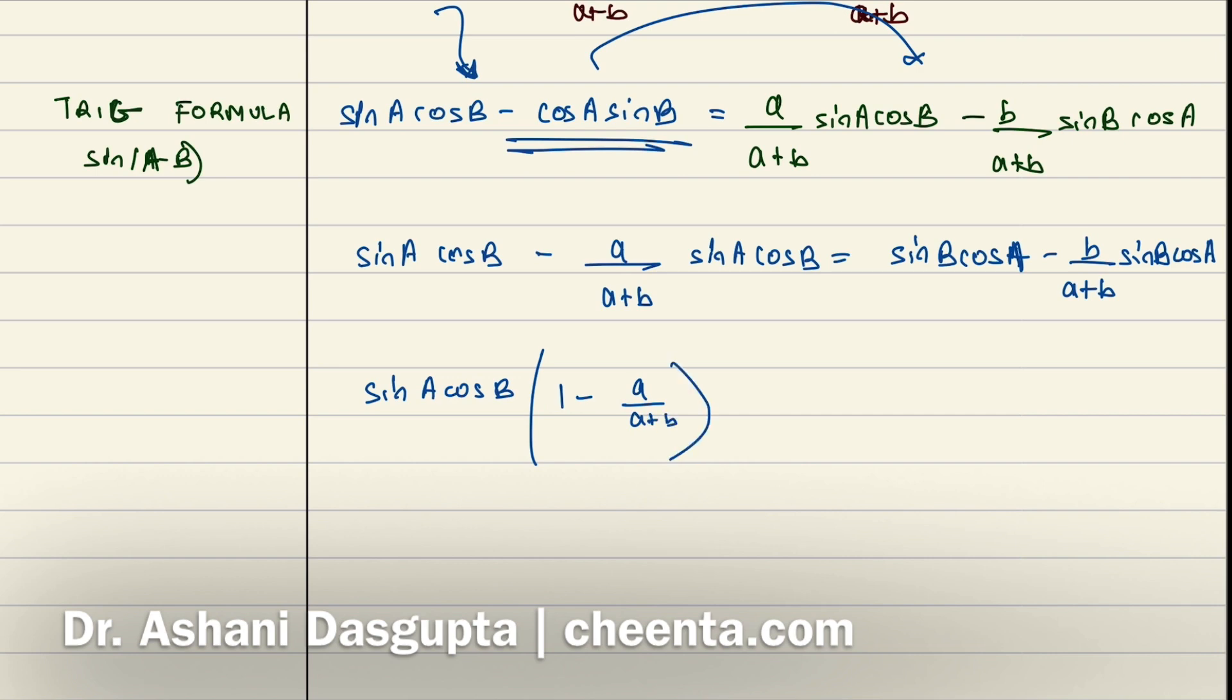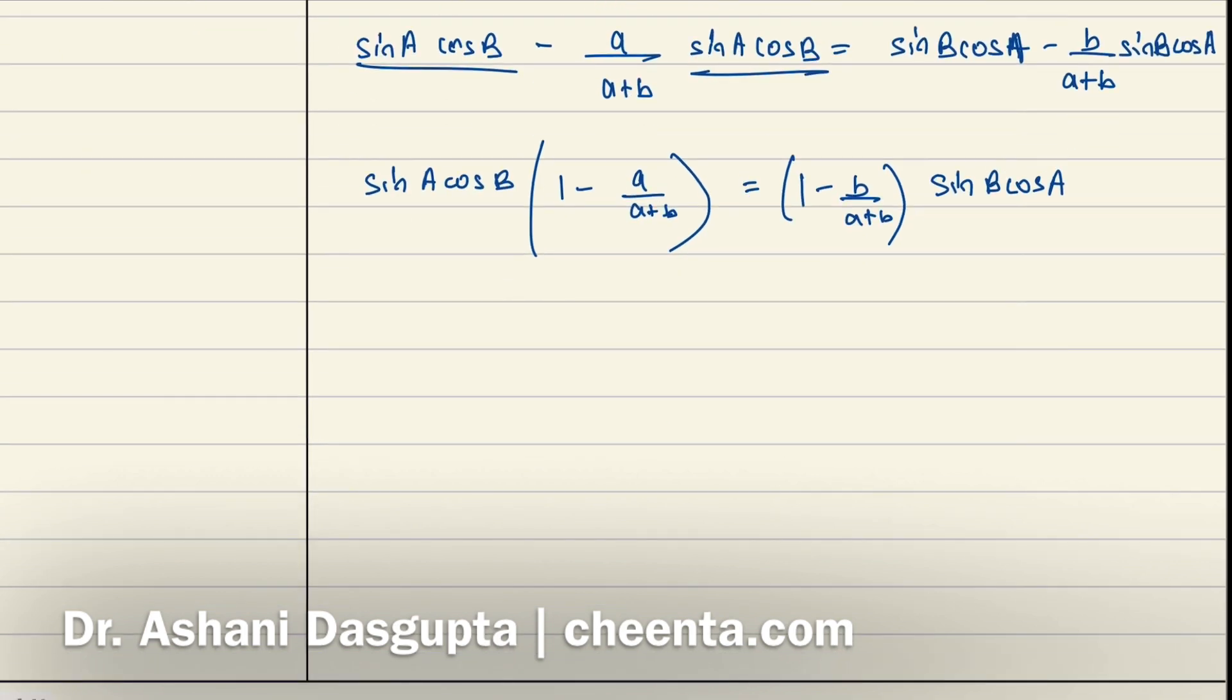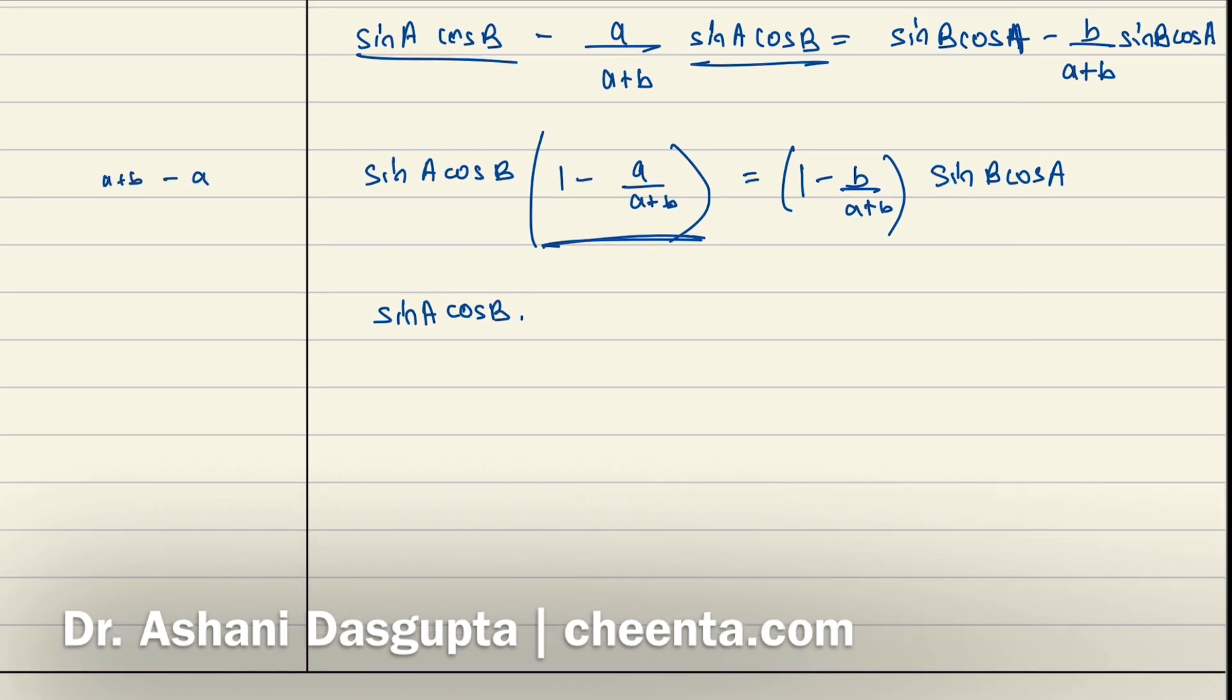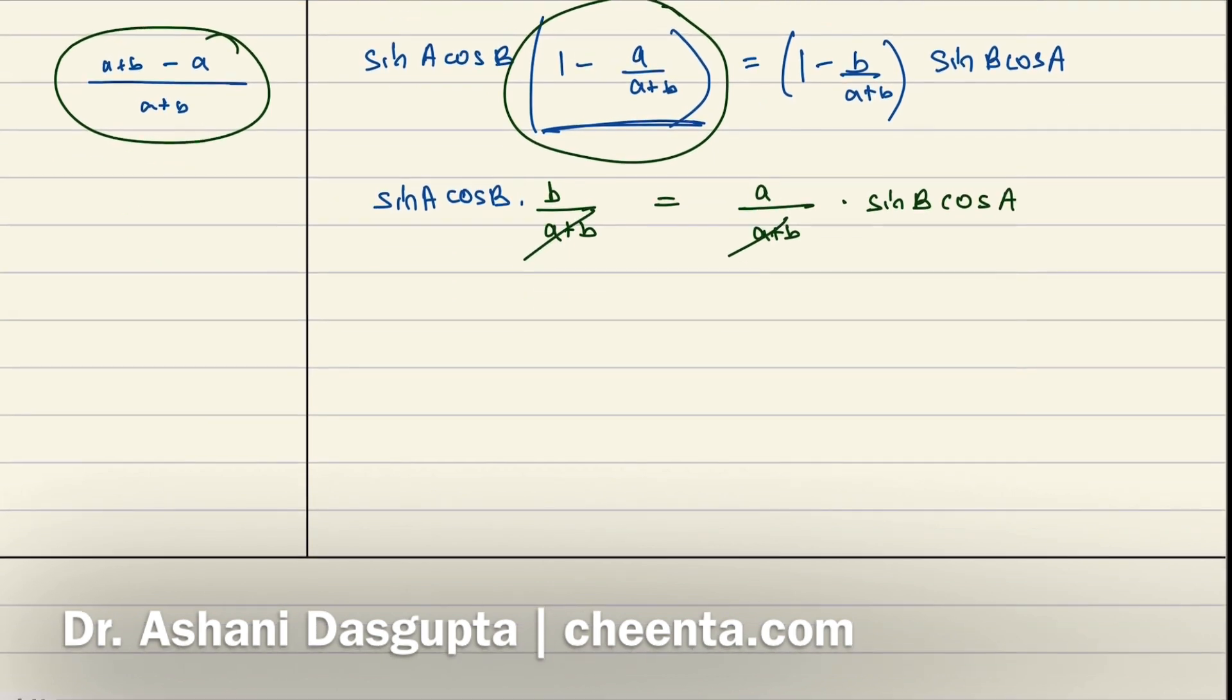So you're almost done. We have sinA cosB times this simplifies to (a+b-a)/(a+b), this little portion, so this is b/(a+b). Similarly this one will be a/(a+b) times sinB cosA. I can cancel off the a+b and then I will do a little trick. I'll just write sinA divided by a, so I'll bring this a downstairs. So sinA/a × cosB equals sinB/b × cosA.